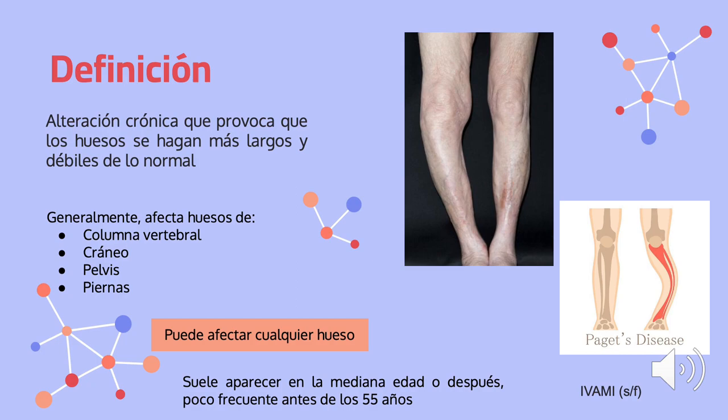La enfermedad de Paget ósea es una alteración crónica que provoca que los huesos se hagan más largos y débiles de lo normal, por lo que se pueden deformar y fracturar más fácil. Generalmente afecta los huesos de la columna vertebral, el cráneo, la pelvis y las piernas. Puede afectar cualquier hueso sin propagarse a otro. Suele aparecer en la mediana edad o después, por lo que es poco frecuente que se presente antes de los 55 años de edad.